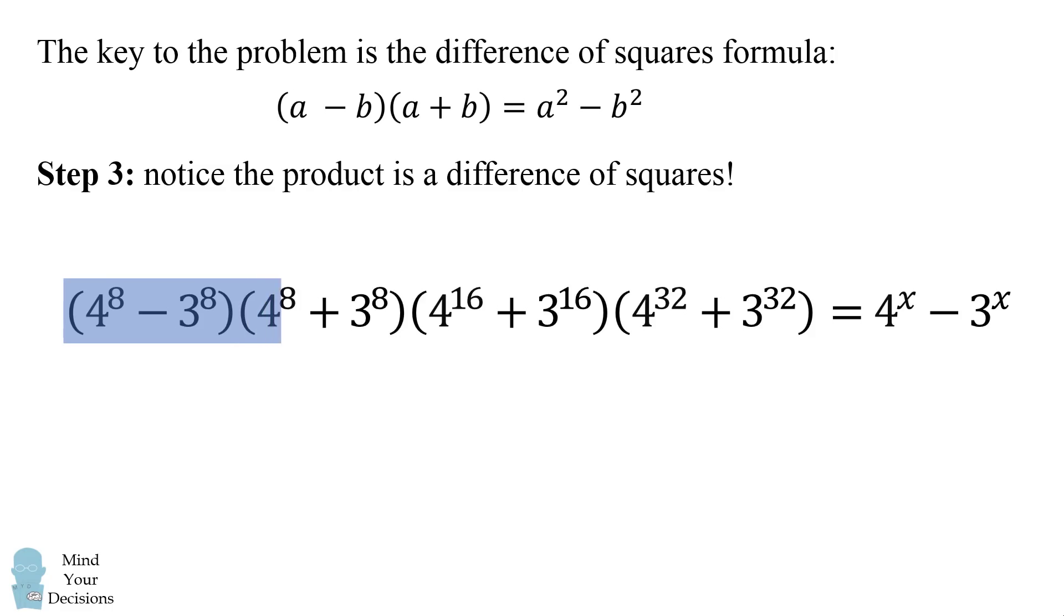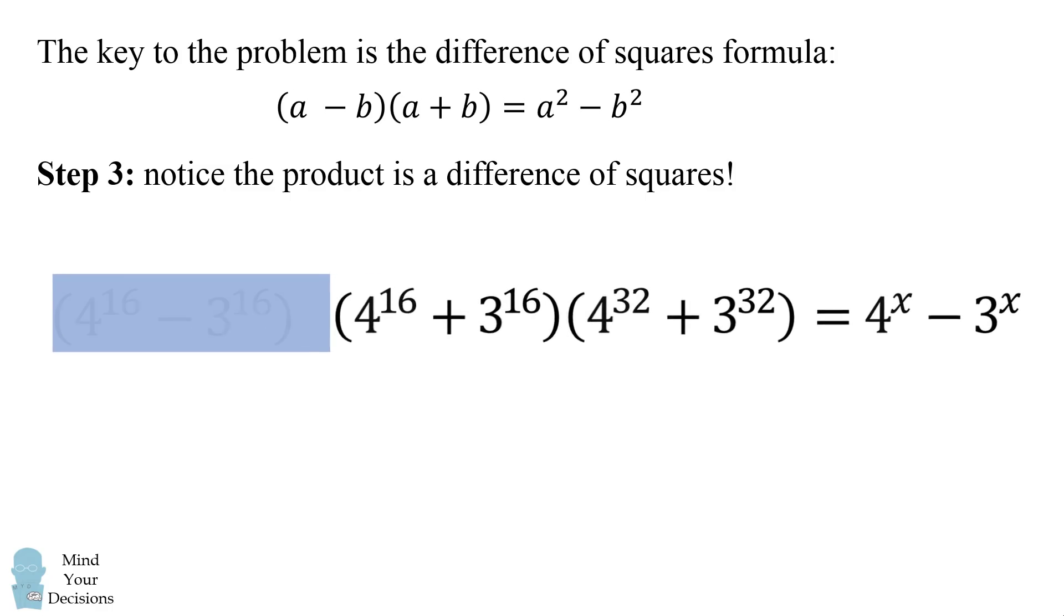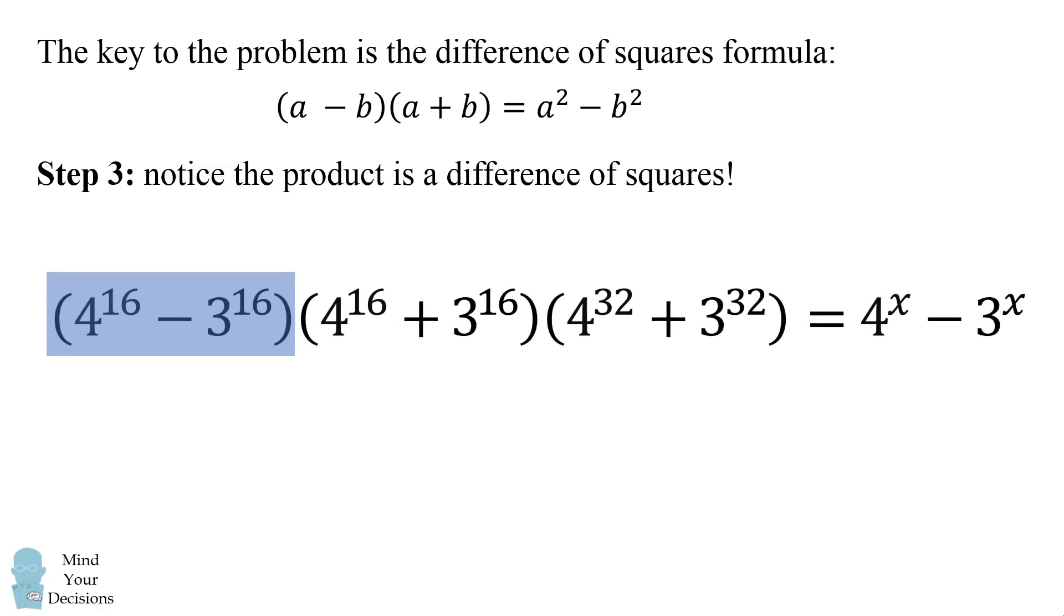And we do this one more time. The first two terms again will simplify to be the difference of squares. So we have 4 to the power of 16 minus 3 to the power of 16 and we do it once more.